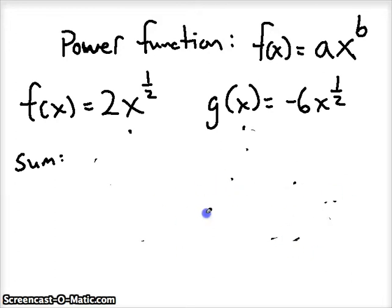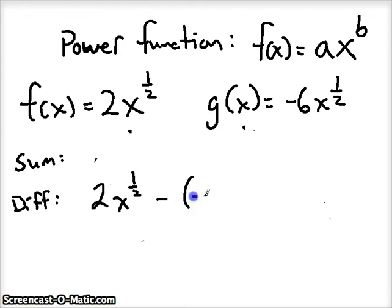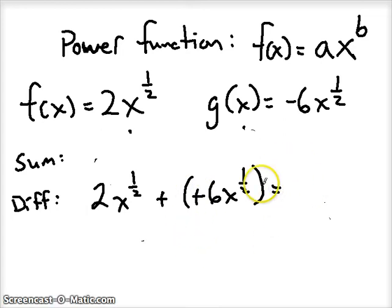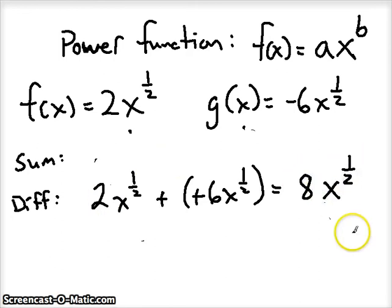Let's find the difference of these two functions: 2x to the one-half minus negative 6x to the one-half. With a double negative, we're actually adding, so we add the coefficients: 2 plus 6 is 8. We keep the term the same — x to the one-half — so the final answer for the difference of the two functions is 8x to the one-half.